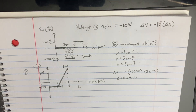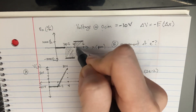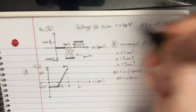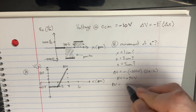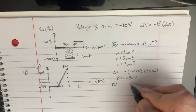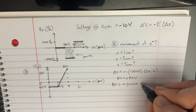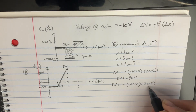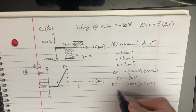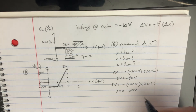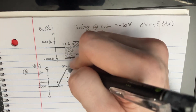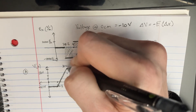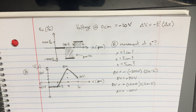For the next step, you're going to move another 2 centimeters through this field of 1,000. Delta V equals negative 1,000 times 2e to the negative 2, which gives you minus 20. So delta V equals minus 20 volts. Now we go from 30 minus 20 and end up at 10 volts. That's how we can figure out the graph of the voltage.